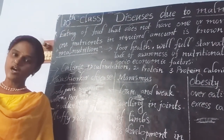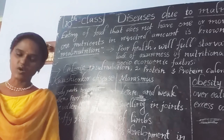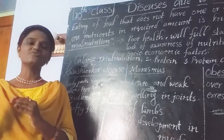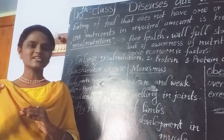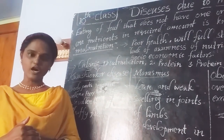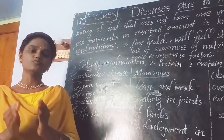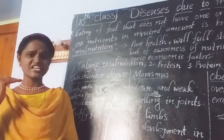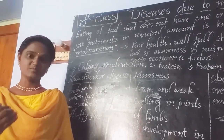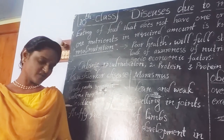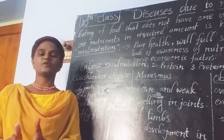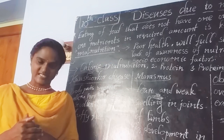Food is one of the important sources to maintain biological processes in a perfect manner. If you want to become a healthy person, then we have to take a healthy, balanced diet. The diet which contains required amounts of carbohydrates, fats, proteins, minerals, vitamins, salts, roughage, and water — if they are present in required amounts, then only it is called a balanced diet.